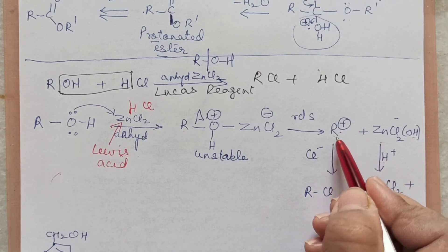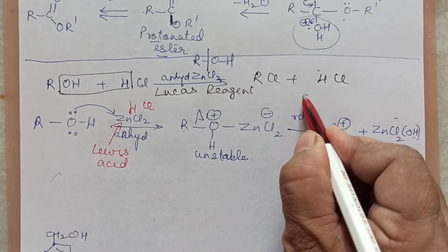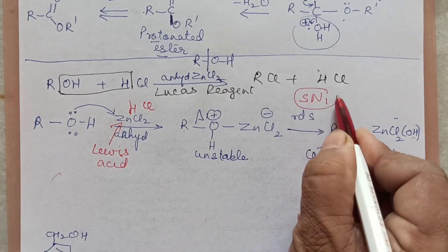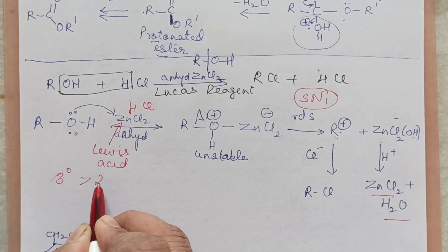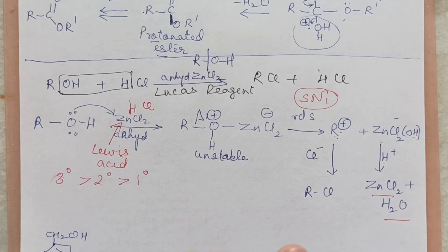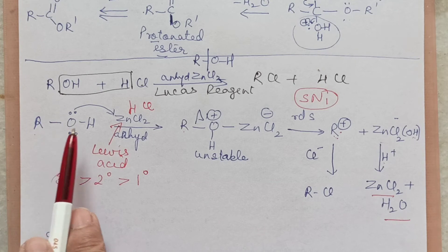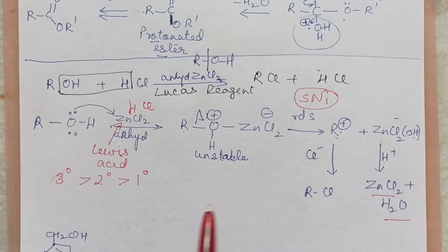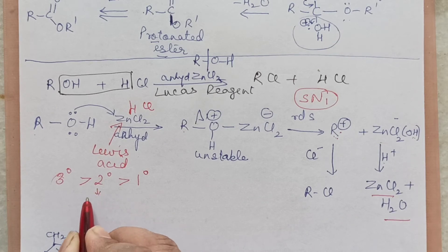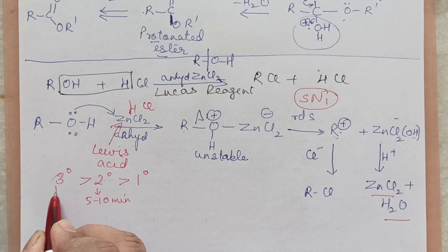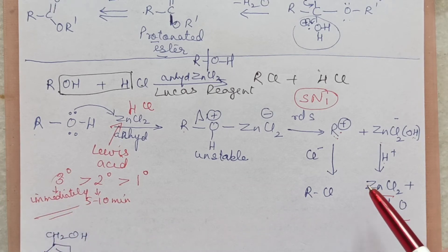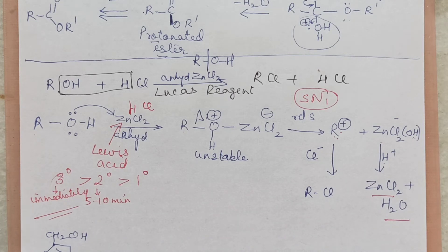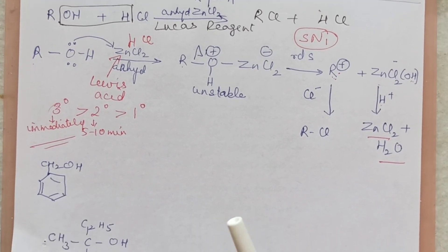ZnCl2 acts as a Lewis acid and catalyst. This reaction proceeds by an SN1 mechanism — a carbocation is formed. The more stable the carbocation, the faster the reaction. A tertiary carbocation is more stable than secondary, which is more stable than primary. That is why with Lucas reagent: primary alcohols show no turbidity, secondary alcohols give turbidity after 5–10 minutes, and tertiary alcohols give turbidity immediately.